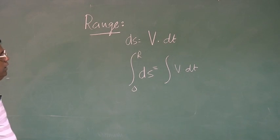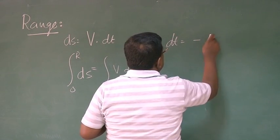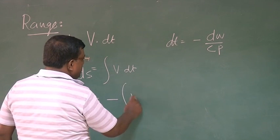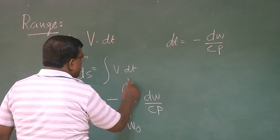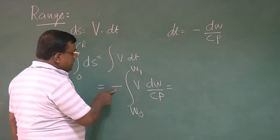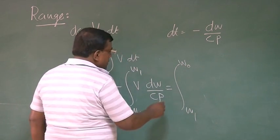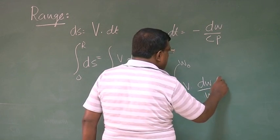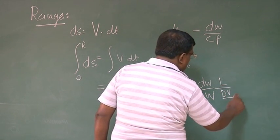Now question is, what is dt? We have already seen dt is minus dW by CP. So I put it here, so this becomes minus V dW by C into P, again from W₀ to W₁. Here I can do little manipulation. First I will change the order of integration to absorb this minus sign. So I write W₁ to W₀, then V, for dW I will divide by W and multiply by lift because lift equal to weight.